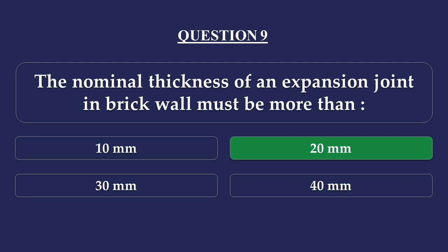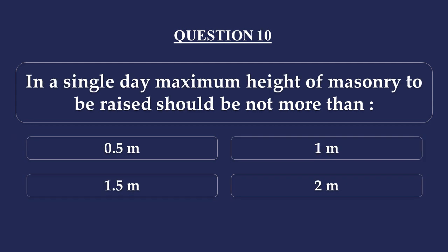Question number 10. In a single day, the maximum height of masonry to be raised should be not more than: Option A - 0.5m, Option B - 1m, Option C - 1.5m, Option D - 2m. The maximum height of masonry that can be raised in one day is 1.5m. The answer is Option C: 1.5m.